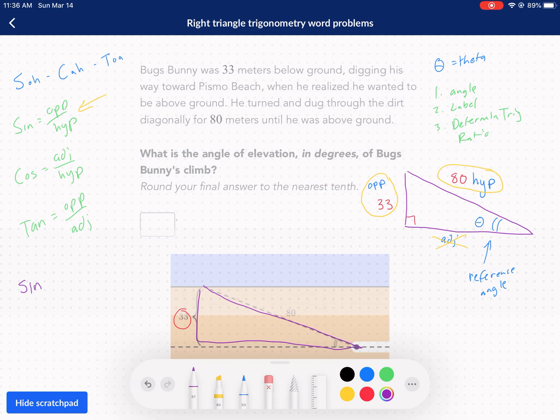We're going to set up our ratio with sine over here on the left. Sine of any angle theta is equal to the opposite over the hypotenuse. So the sine of our missing angle theta is going to be equal to our opposite side, 33, over our hypotenuse, which is 80.